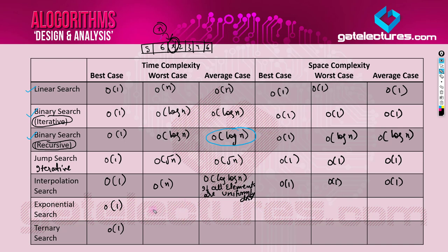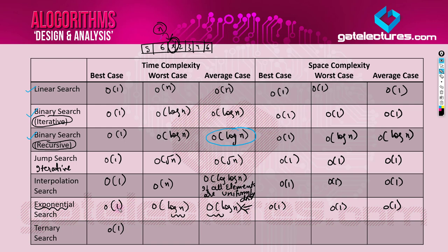Exponential search takes O(log n) time in both worst and average cases — it doesn't take more than that. There are particular scenarios where binary search can be shown to be better than exponential search, which we will discuss. Despite the name suggesting something like a constant raised to the power n, exponential search is actually O(log n) — the name is quite misleading.